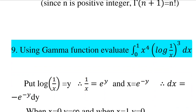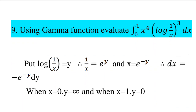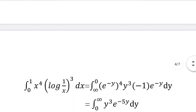Then x equals e raised to minus y and dx equals minus e raised to minus y dy. When x equals 0, y equals infinity, and when x equals 1, y equals 0. So the integral from 0 to 1 of x raised to 4 times log 1 by x the whole cube dx becomes integral from infinity to 0 of e raised to minus y the whole raised to 4 times y cube times minus e raised to minus y dy.